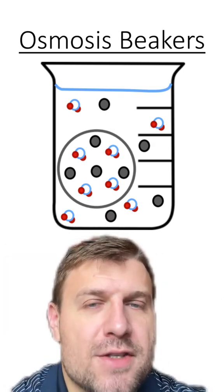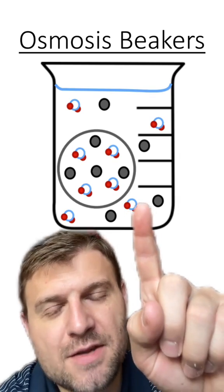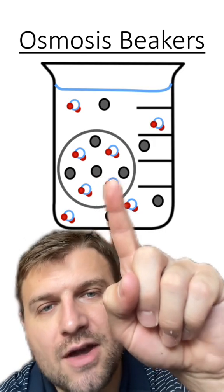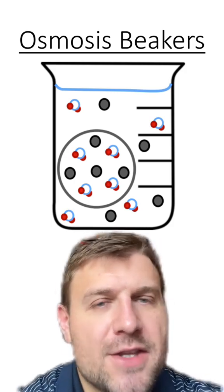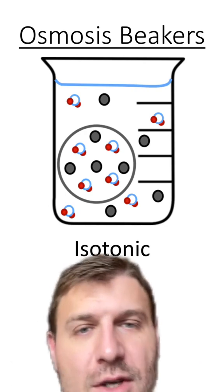Remember that osmosis is the movement of water from areas of high to low concentration. In this beaker, you can see there's about an even amount of water molecules and solute molecules in the cell compared with outside the cell. Remember, we're not talking about total amount, we're just talking about the concentration. And it's about even, which means this is going to be an isotonic solution.